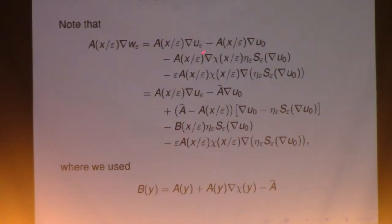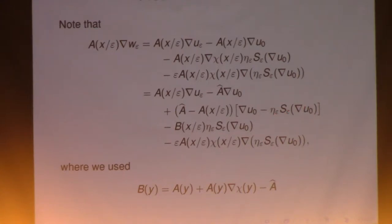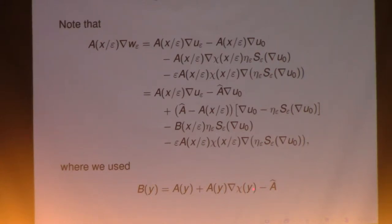So for the rest, we're going to have to deal with the second and first three terms. We're going to simply put A-hat times the gradient of U0 up there. And then we'll replace the gradient of U0 by a cutoff function multiplied by the smoothing of the gradient of U0. So you generate a difference. And when you combine all the remaining terms, you'll end up with B of x over Y — the matrix we introduced earlier, which has two properties: the mean is zero, and the divergence of each column is zero.